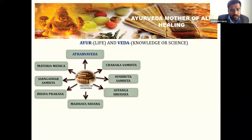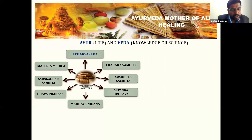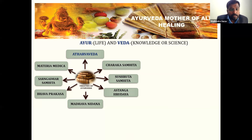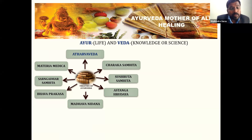Other than these three main texts, information is also mentioned in Madhav Nidana, Bhav Prakasha, Sharangdhara Samhita, and Materia Medica. Sharangdhara Samhita dates to 5000 to 1000 BC, with Charak Samhita also from that period. All Ayurvedic medicinal preparations along with their different surgical techniques have been mentioned in these ancient texts.